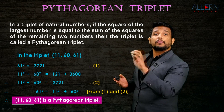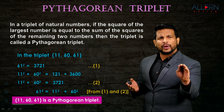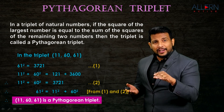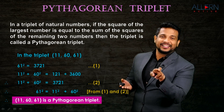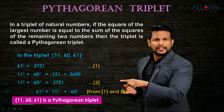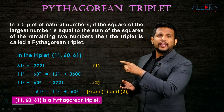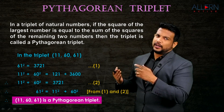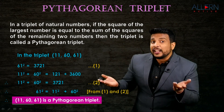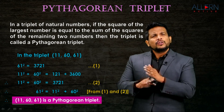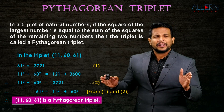Take the square of the largest number and mark it as result number one. Then do the sum of the squares of the remaining two numbers and mark it as result number two. If you get them equal, it is a Pythagorean triplet. If they are not equal, then it is not a Pythagorean triplet.